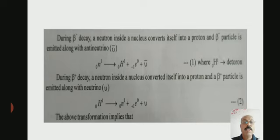Here n is a neutron. An electron is emitted. During beta positive decay, a proton inside the nucleus converts itself into a neutron, and a beta plus particle is emitted along with a neutrino. The equation below shows the beta plus decay.